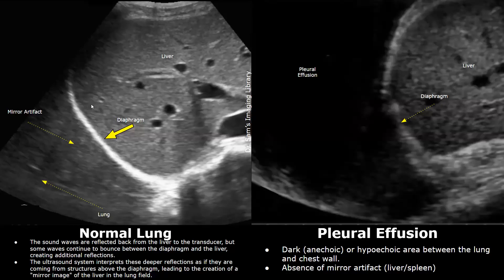The waves are unable to reach the transducer, or they reach the transducer late. When these echoes reach the transducer late, the ultrasound system thinks they are coming from a deeper location. That is why these echoes are seen deeper — at the lower half of the image — hence they appear in the lung field as mirror artifacts: a mirrored image of the liver or spleen on the left side. This is how a normal lung will appear on ultrasound.